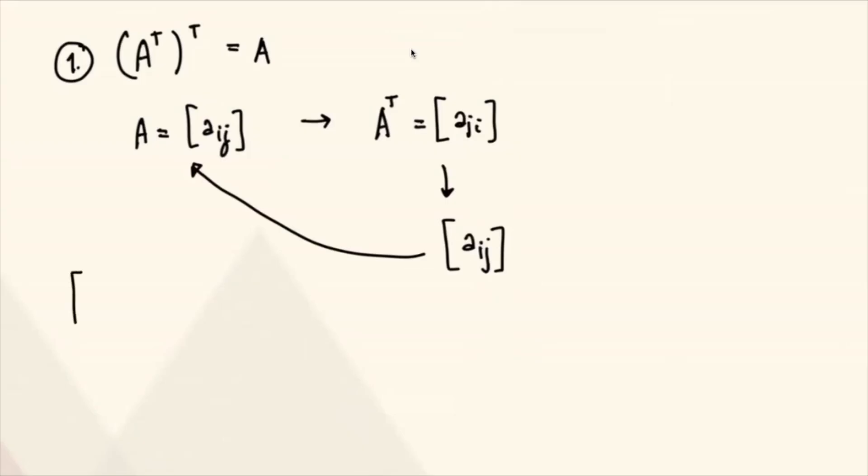So whenever you have a matrix, let's say 1, 0, 2, 1. So the transpose for this is 1, 2, 0, 1. So parang ang nangyayari, kinuha mo yung transpose niya, and then kukunin mo ulit yung transpose niya.